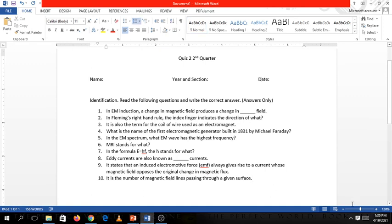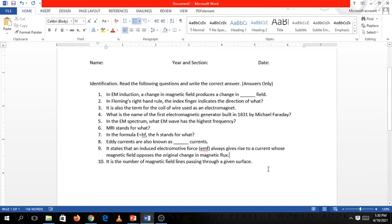So question number 1. In EM induction, a change in magnetic field produces a change in blank. 2. In Fleming's right hand rule, the index finger indicates the direction of what? 3. It is also a term for the coil of wire used as an electromagnet. 4. What is the name of the first electromagnetic generator built in 1831 by Michael Faraday? 5. In the EM spectrum, what EM wave has the highest frequency? 6. MRI stands for what? 7. In the formula E equals HF, the H stands for what? 8. Eddy currents are also known as blank currents. 9. It states that an induced electromagnetic force, or EMF, always gives rise to a current whose magnetic field opposes the original change in magnetic flux. And number 10, it is the number of magnetic field lines passing through a given surface, or a closed surface.